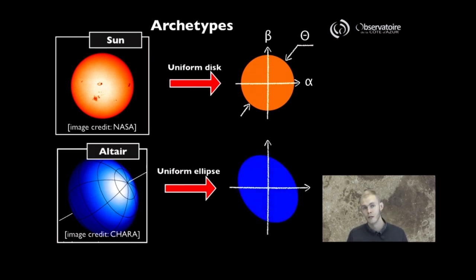An ellipse, as opposed to a disk, requires more degrees of freedom. Instead of a single diameter, you'd have two diameters for two different azimuths.